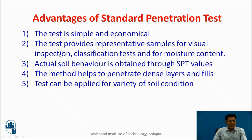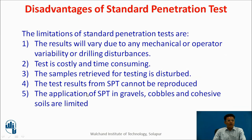Advantages of the standard penetration test: it is a simple and economical test; it provides representative samples for visual inspection, classification, and moisture content determination; actual soil behaviour is obtained through SPT values; and the method helps penetrate dense layers. The test can be applied for a variety of soil conditions. However, disadvantages include: results vary due to mechanical or operator variability or drilling disturbances; it is costly and time consuming; samples retrieved are disturbed; test results cannot be reproduced; and the application of SPT in gravels, cobbles, and cohesive soils is limited.